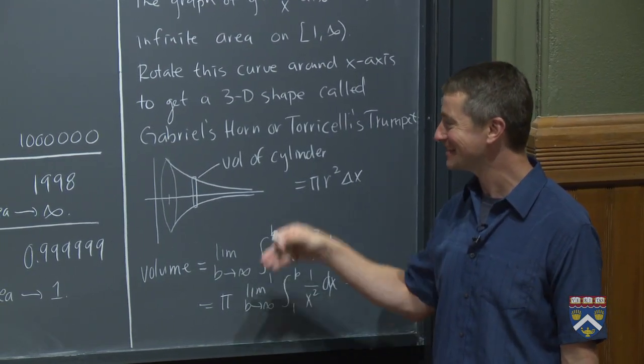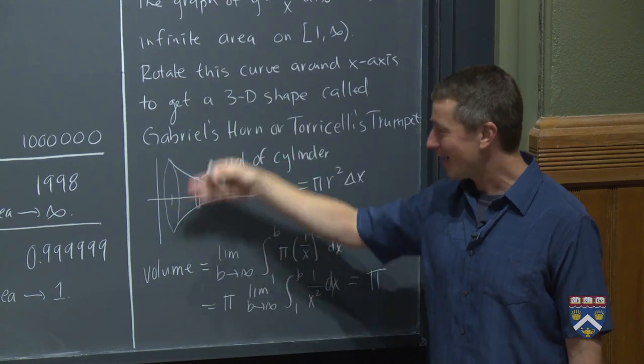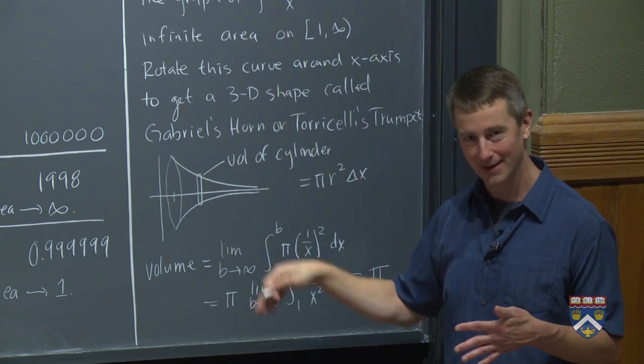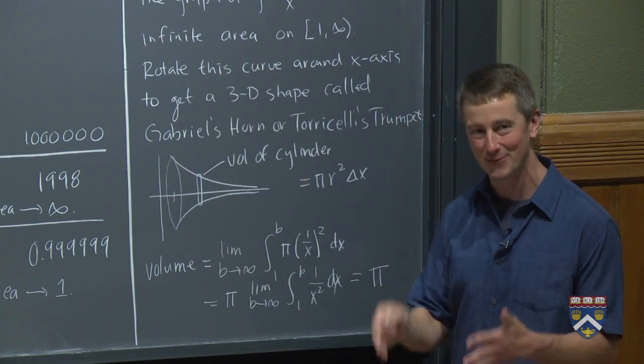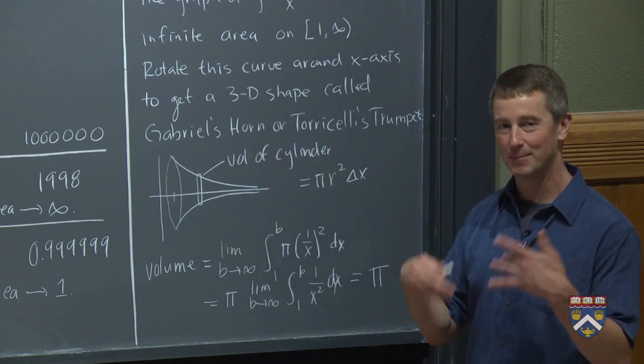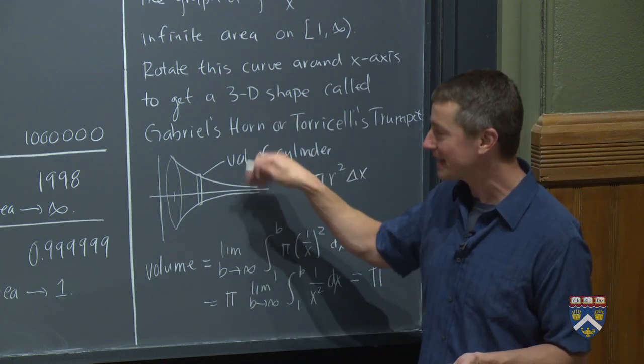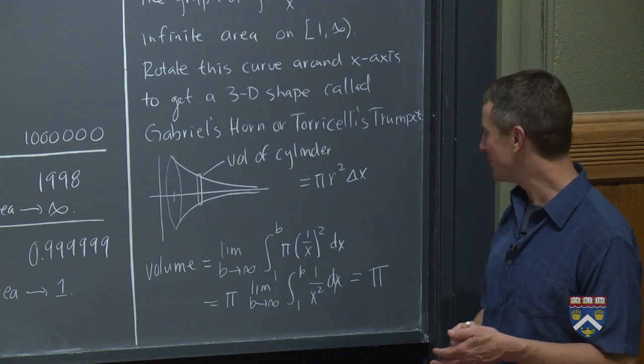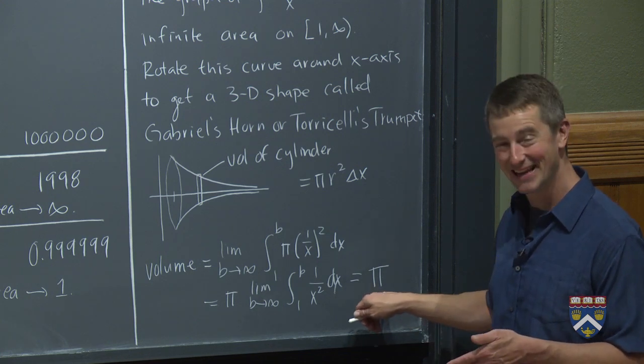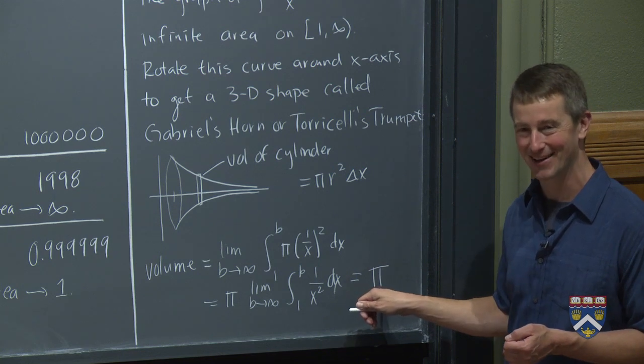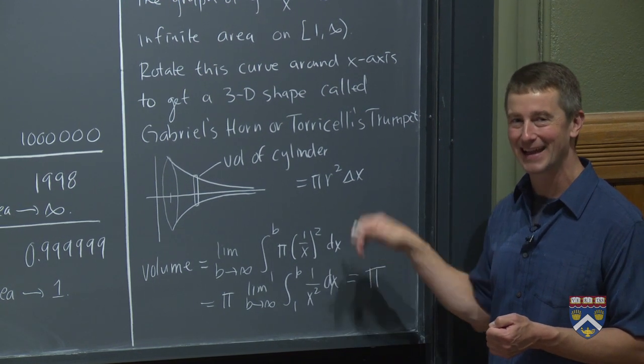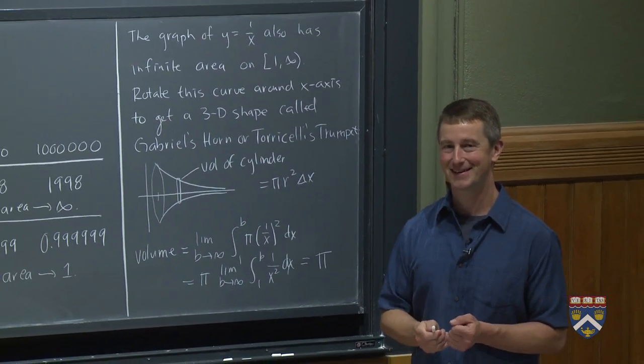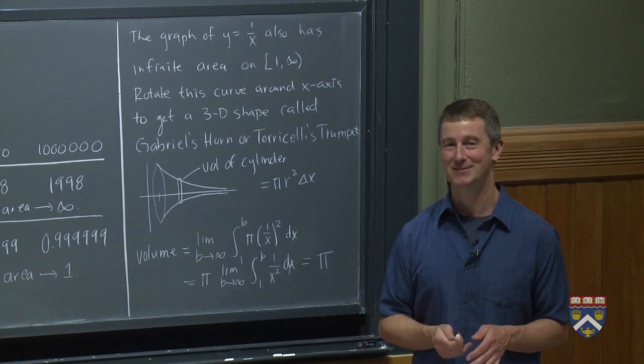So just to restate this again, the area of a cross section through the center is infinite. Therefore, the surface area around the whole thing must be even more. That's also infinite. If you want to paint the outside of this thing, you've got to buy infinitely much paint. If you turn it on its side and you fill it up with milk, you only need pi units, pi cubic units of milk. It's got a finite volume and an infinite surface area. Finite volume, infinite surface area. That is crazy. Please spend some time pondering that.